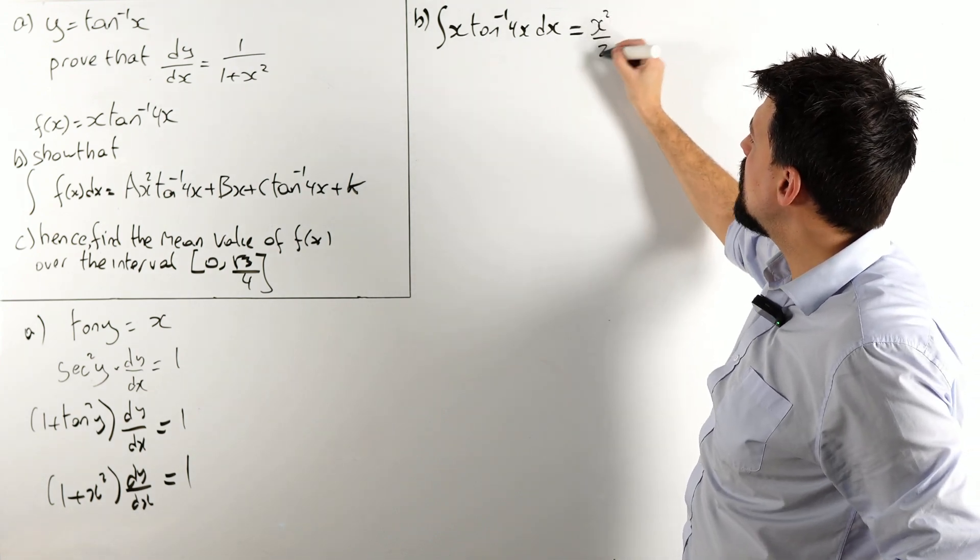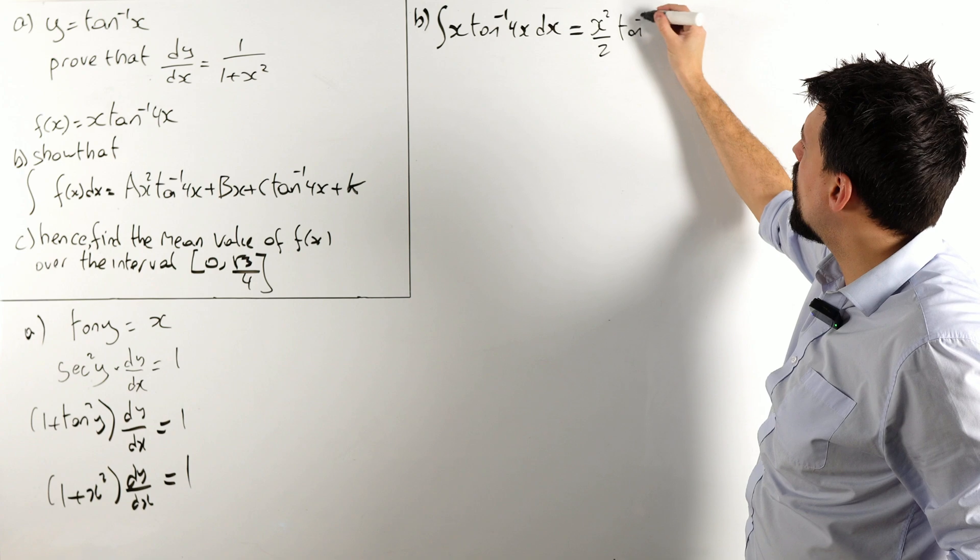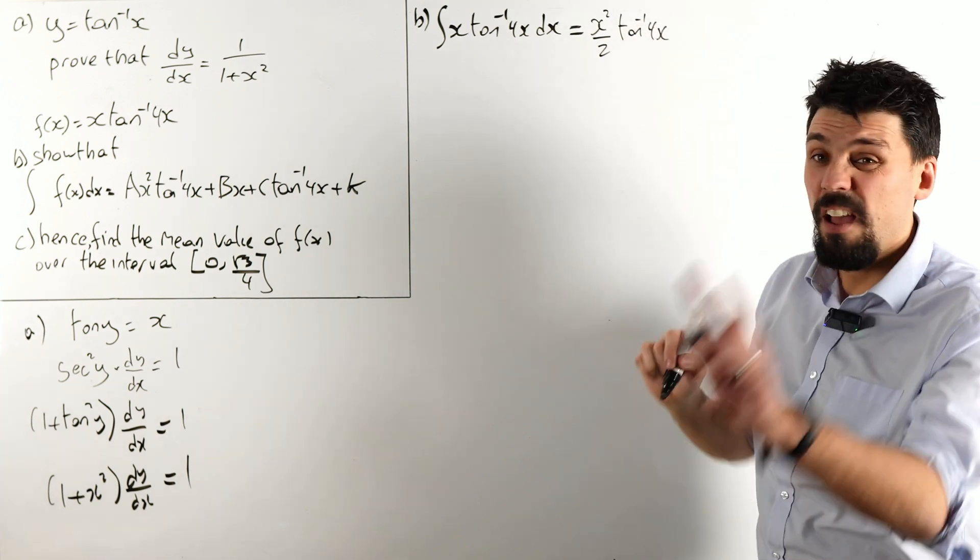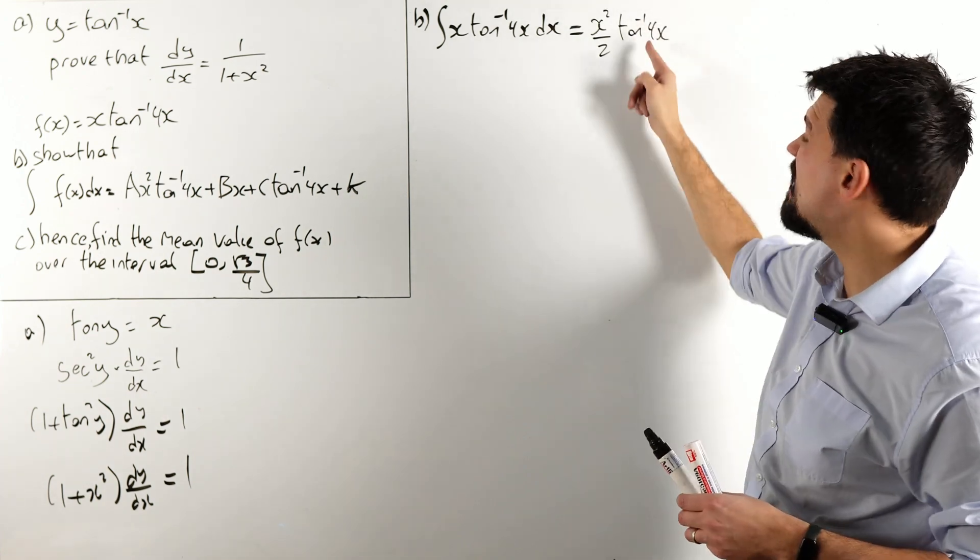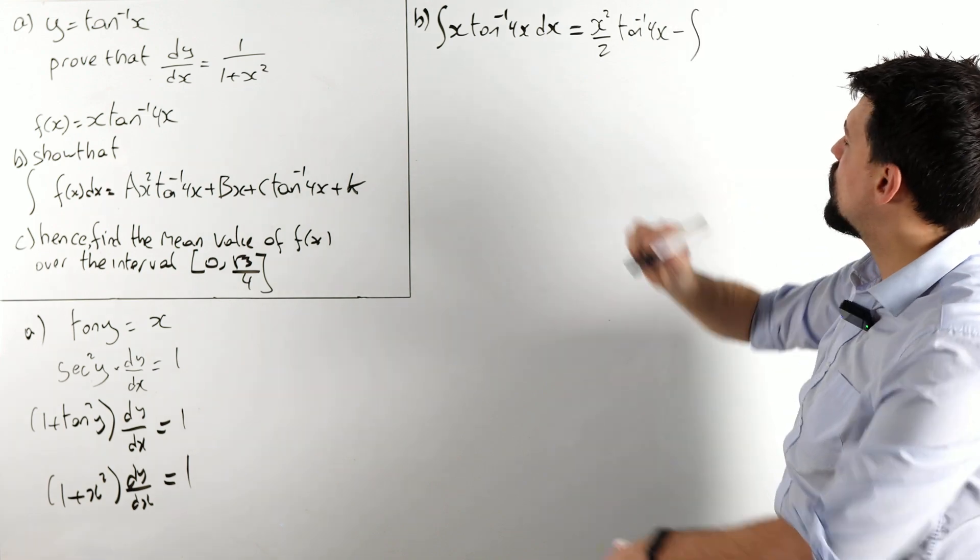We are going to integrate the x and differentiate the tan minus 1 of 4x. So, what do I get? Integrate the x, x squared over 2, keep the tan minus 1 of 4x. I'm already pretty excited, that looks distinctly like this term here, we're on the right track.